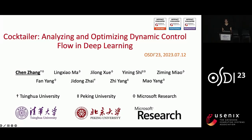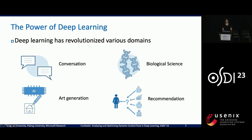Hello, everyone. I'm Chen Zhang. Today, I will introduce our work called Tiller, Analyzing and Optimizing Dynamic Control Flow in Deep Learning. This is a joint work of Tsinghua University, Peking University, and Microsoft Research.